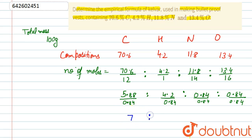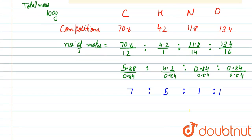7 ratio 5 ratio 1 ratio 1. This will cancel out, so these are the ratio of number of moles of these compounds. So we will get the empirical formula as C7H5NO. This will be the empirical formula for Kevlar.